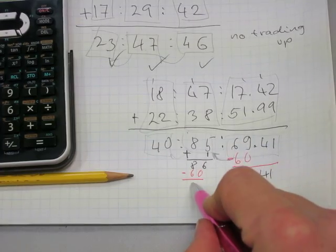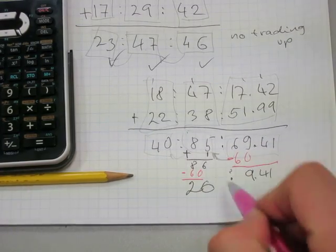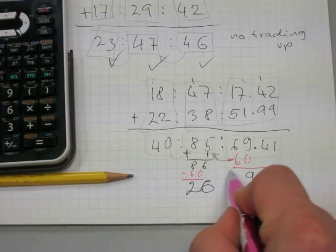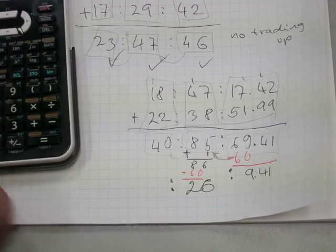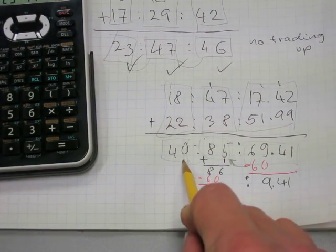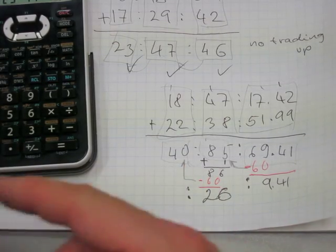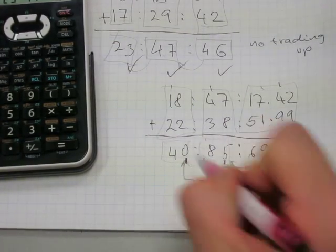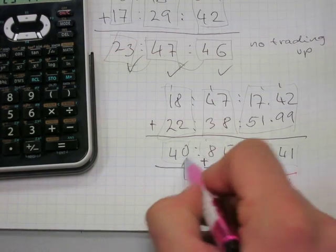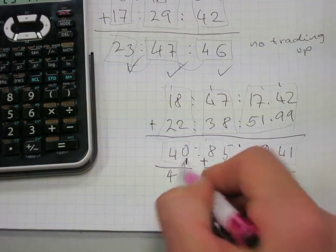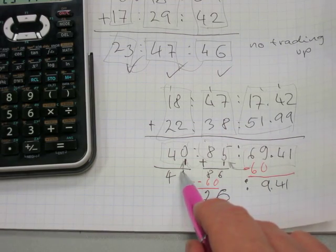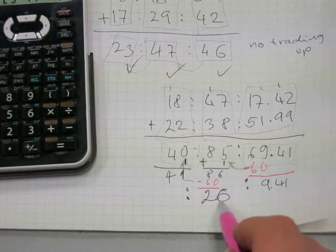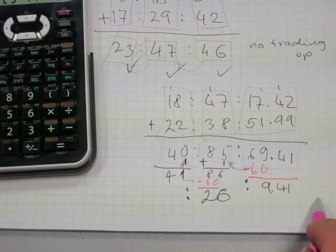When we take 60 from 86 minutes, we have 26 minutes left as part of the final answer. The 60 minutes trade up to the hours column as 1 hour, because 60 minutes make 1 hour. The total becomes 41 hours, 26 minutes, and 9.41 seconds.